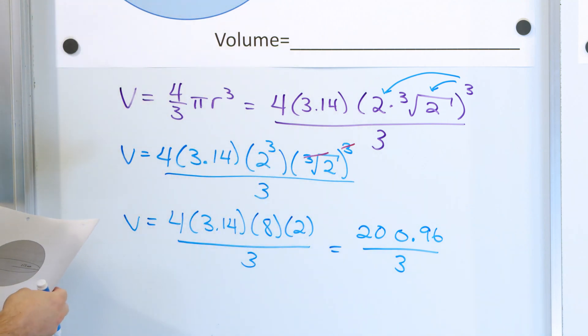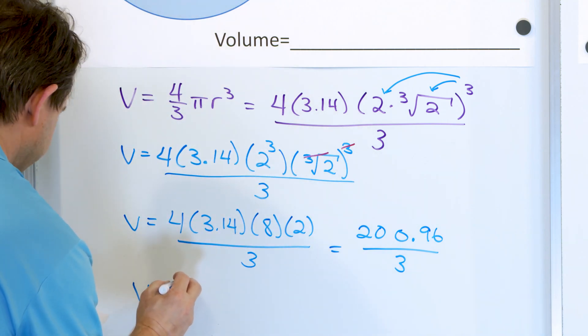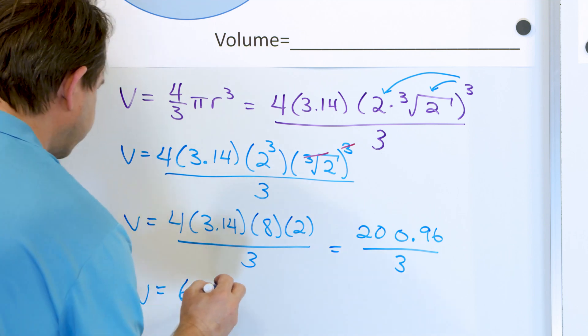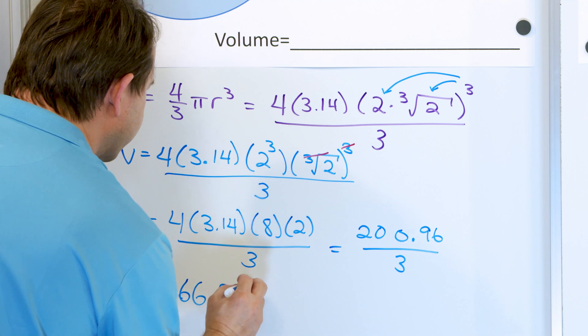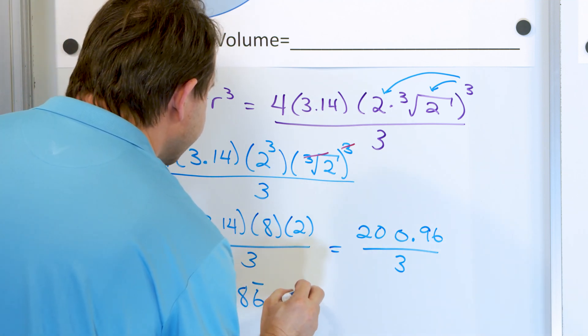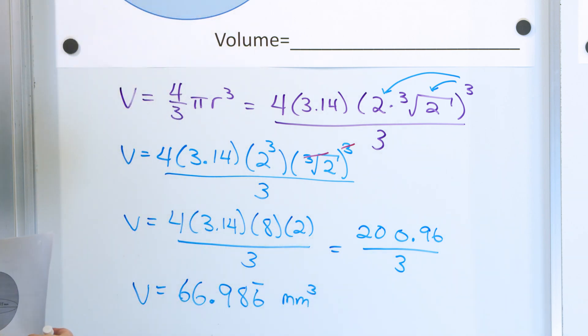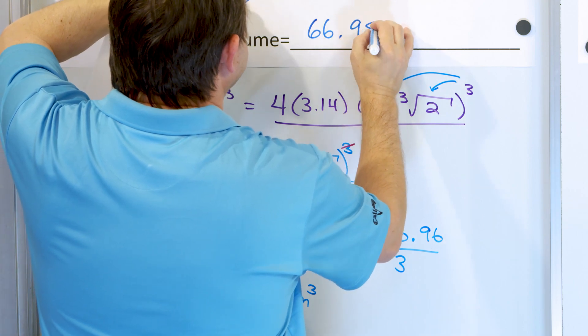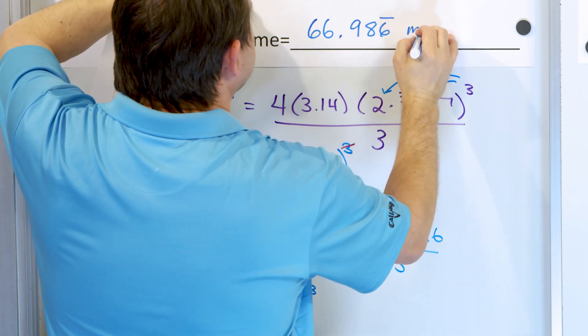So when you take 200.96 divided by 3, you get a final volume of 66.986 repeating bar. And we had millimeters here for the unit, so this is cubic millimeters. 66.986 repeating, cubic millimeters.